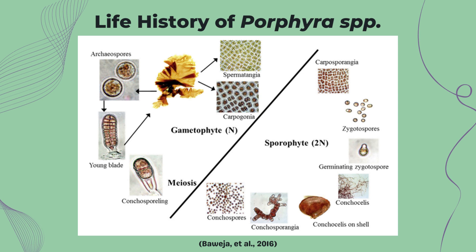Porphyra reproduces through both sexual and asexual modes. In sexual reproduction, certain mature vegetative cells differentiate into carpogonia, and other vegetative cells on the same or a different thallus differentiate into colorless spermatangia. After fertilization, the carpogonia will divide to form the zygotospores or carpospores, which usually germinate unipolarly to produce the filamentous conchocelis phase.